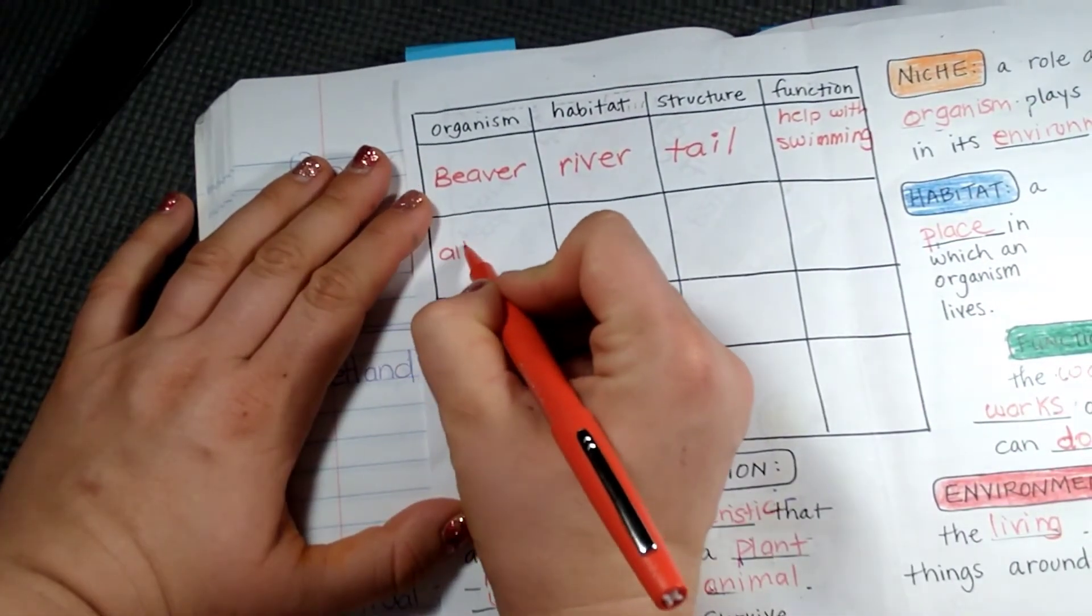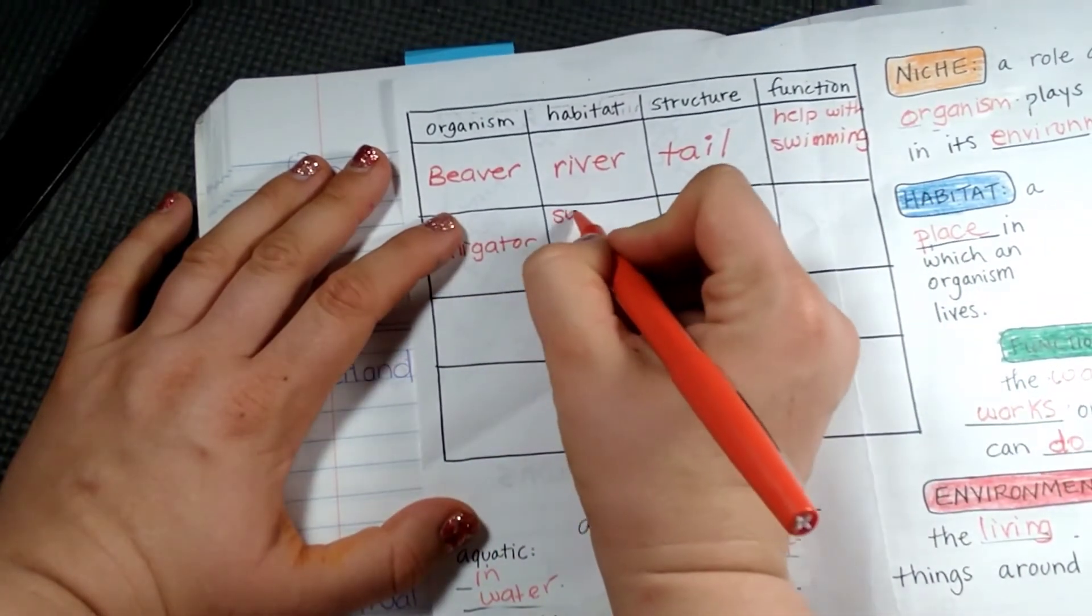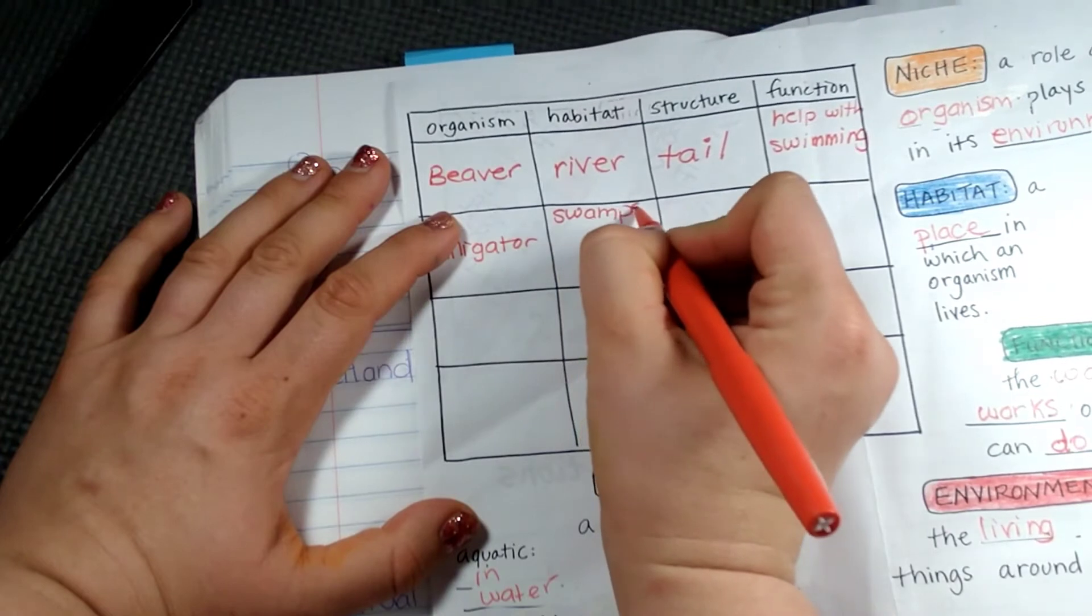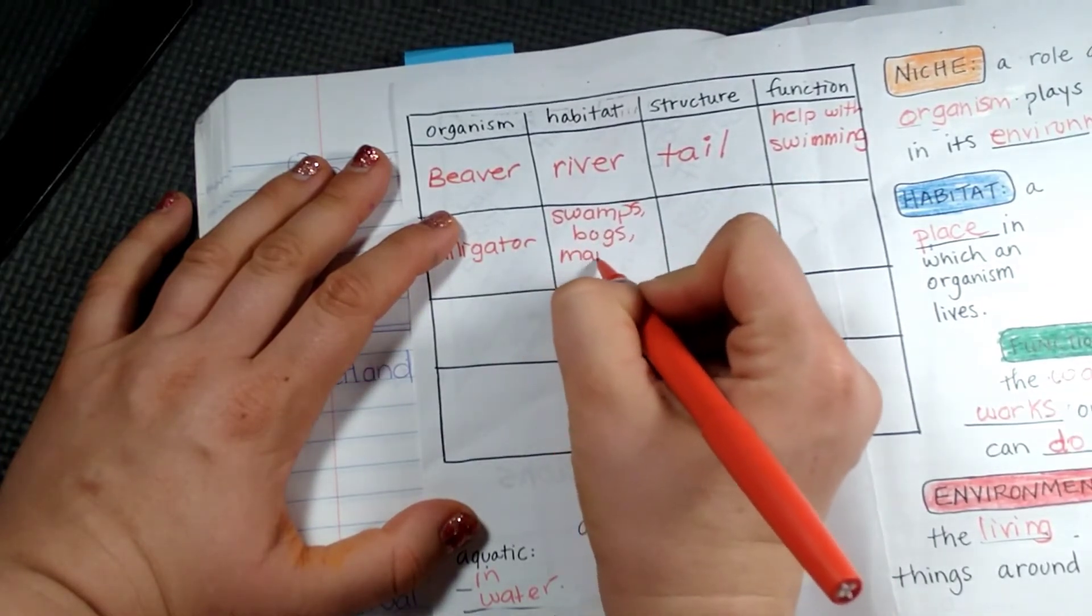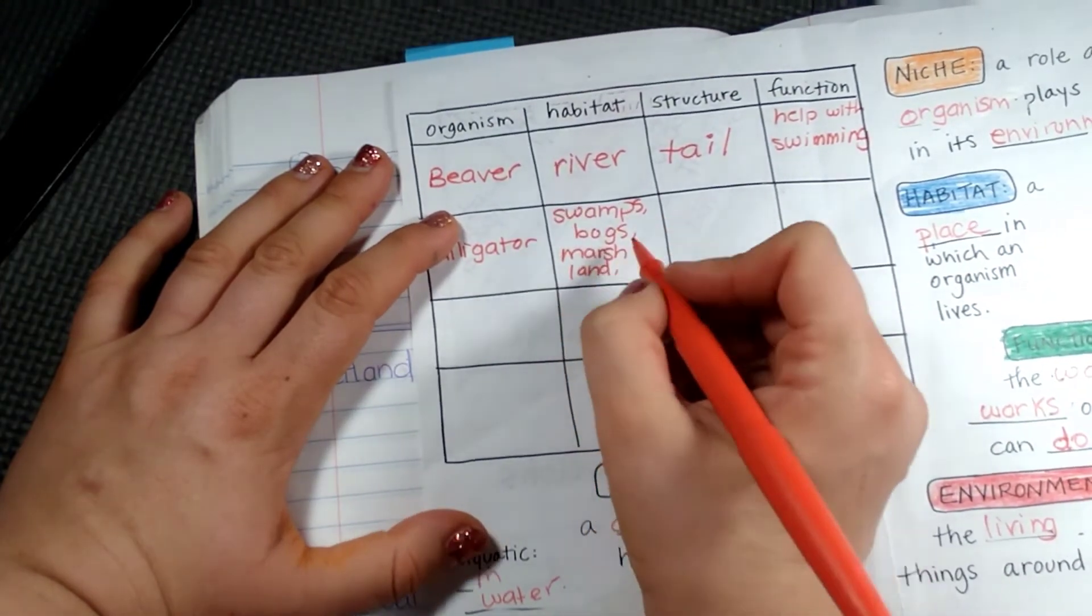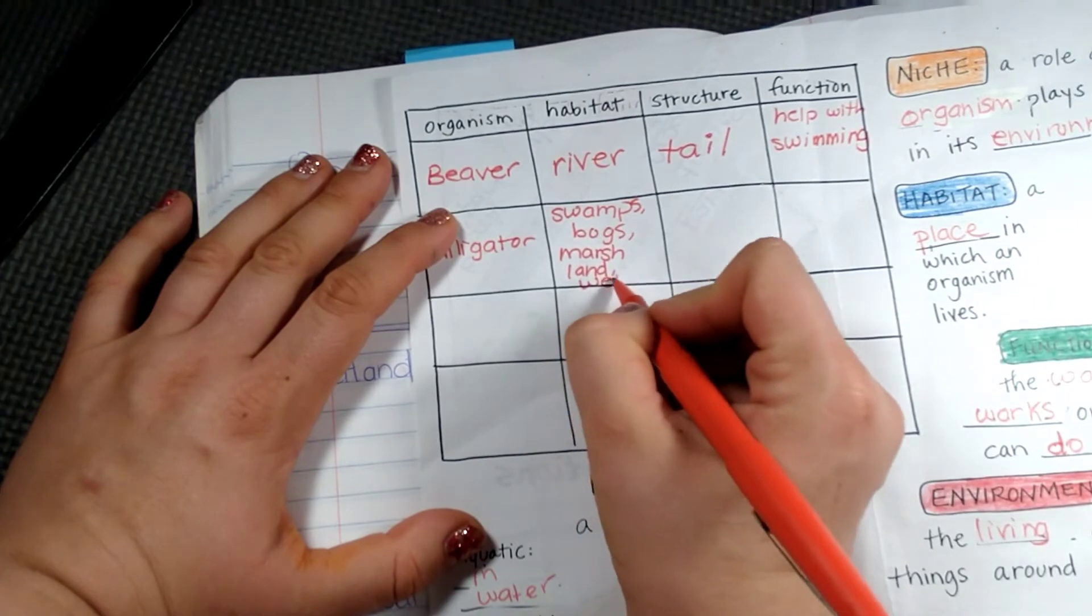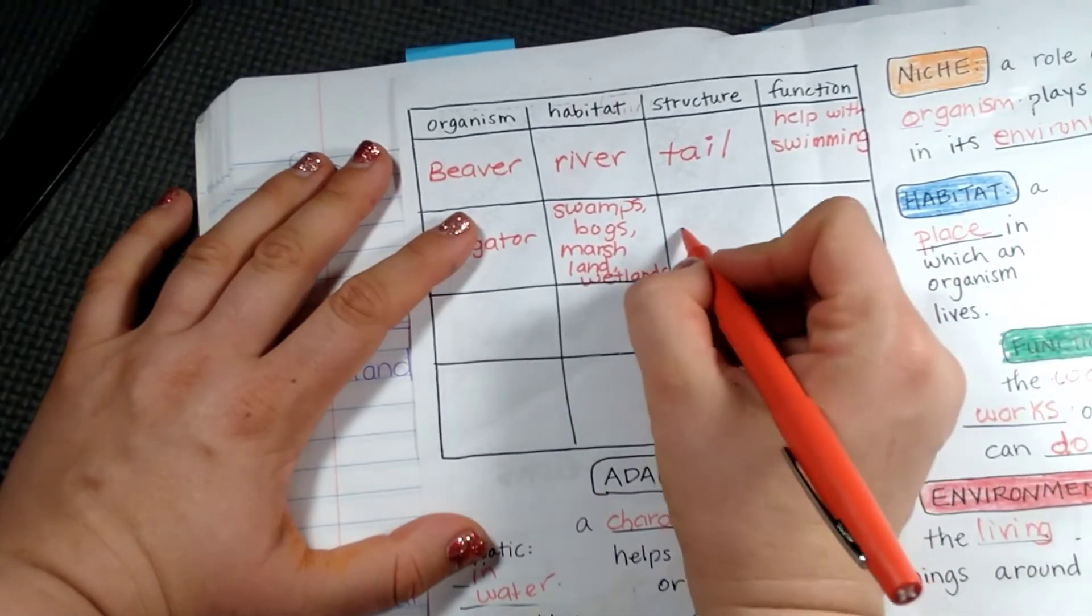Another one is an alligator. Now we know alligators live in swamps, bogs, marshland, and wetlands, and any pond in Florida. They have scales.